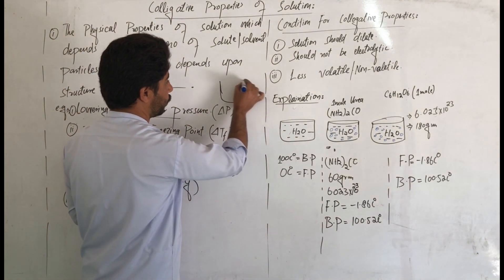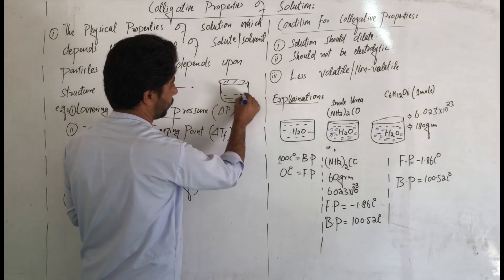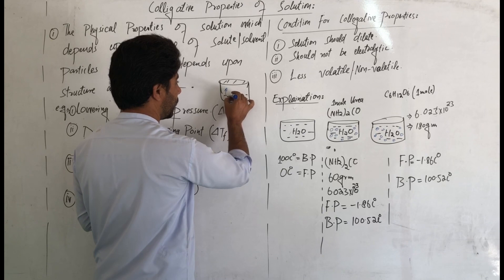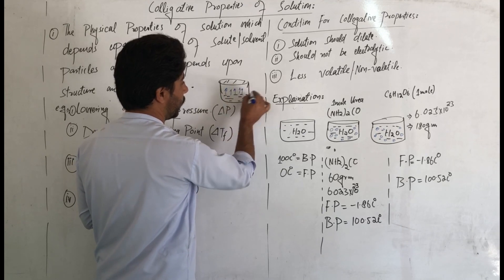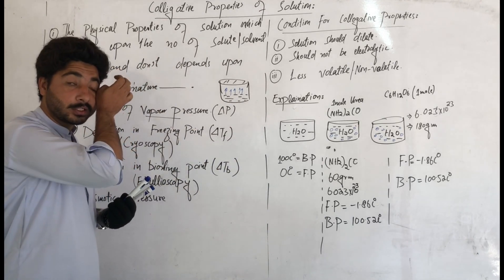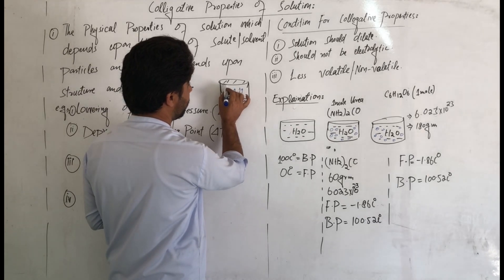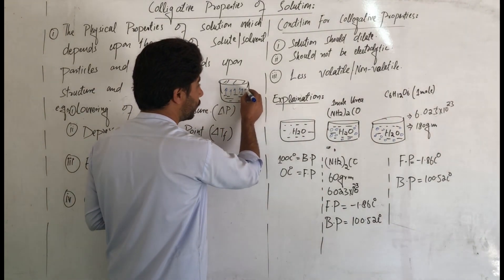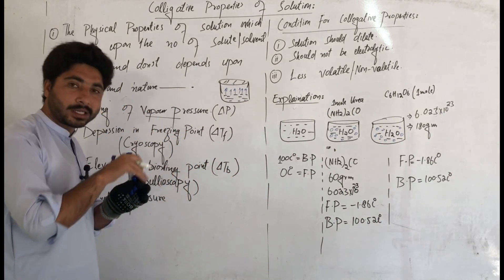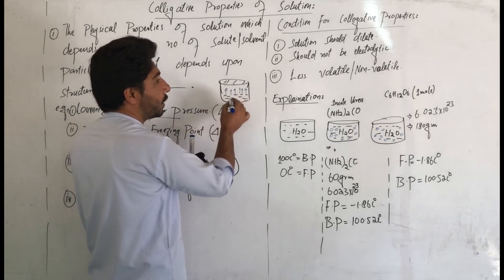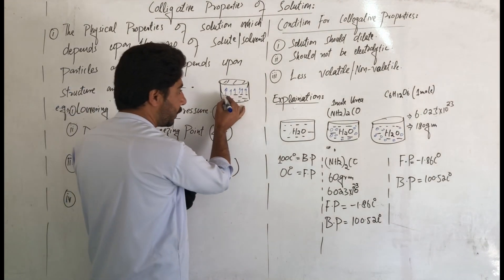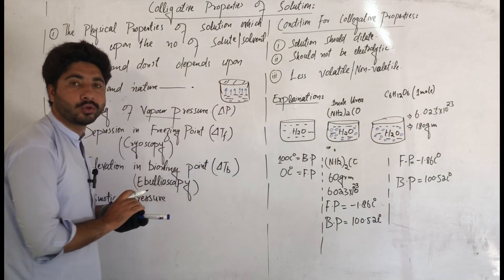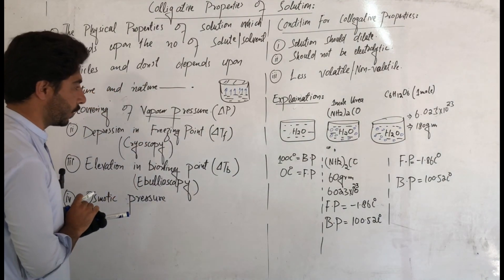What is meant by vapor pressure? If you take a container, for example, with water molecules inside a closed container, and you apply heat, evaporation starts. Molecules at the surface convert to gas — this is evaporation. Some molecules condense back to water. At equilibrium state, the pressure applied by the vapor molecules on the liquid surface is called vapor pressure.